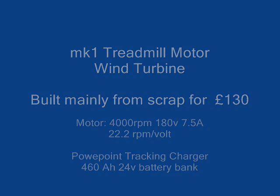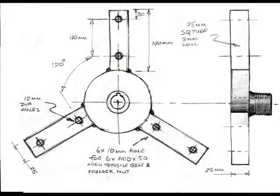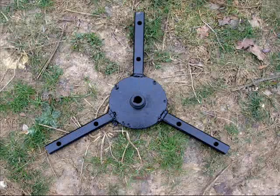Hi, this is my Mark 1 treadmill motor wind turbine with PVC pipe blades. The inch square mild steel spokes are welded to the treadmill flywheel which is cast.